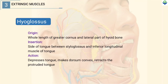Hyoglossus. It originates from the whole length of the greater cornea and lateral part of the hyoid bone. It gets inserted into the side of the tongue between styloglossus and inferior longitudinal muscle of the tongue. It depresses the tongue, makes the dorsum convex and retracts the protruded tongue.